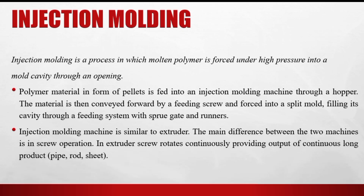Injection molding forces molten polymer under pressure into a mold cavity through an opening. It is similar to the extrusion process. In extrusion, a continuous product is obtained; in injection molding, discrete batch-form products are made. With the help of a screw that moves both rotationally and forward and backward, the raw material is forced into the mold, heated and melted. After the mold takes the desired shape, it is cooled and the product is removed using an ejector pin.